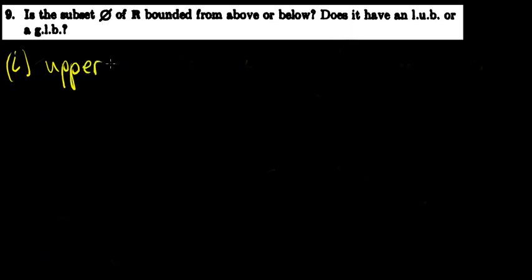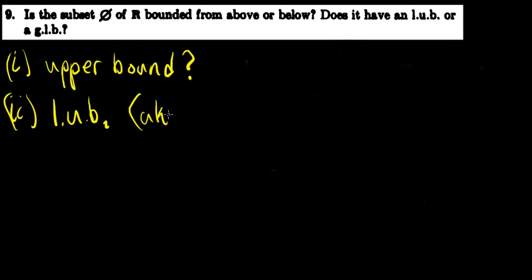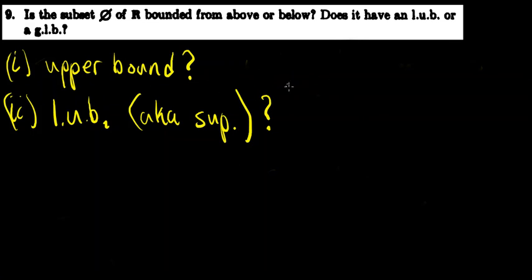Is the empty set, which is a subset of R and actually a subset of every set, bounded from above or below? Does it have a least upper bound or a greatest lower bound? In this video, we will first prove whether it has an upper bound or not, and then next we'll prove whether it has a least upper bound, sometimes also known as supremum or sup for short. I'll leave the proofs of whether it has a lower bound and a greatest lower bound up to the viewer, because those proofs are very similar arguments to what I'm about to show here.